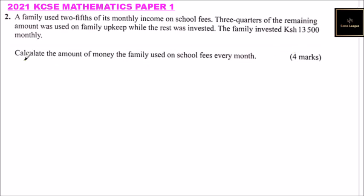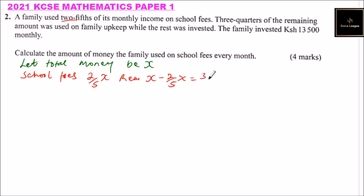For us to be able to solve this, we can say let total money be X. So once you have that, then you see two-fifths was used for school fees. So you can say school fees, they were using two-fifths of X. So the remaining amount is X minus 2 over 5. It is like 1 minus 2 over 5. So this equals, we will get 3 over 5 X. So that is what remained.